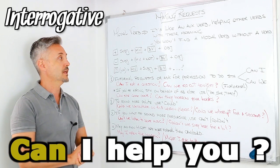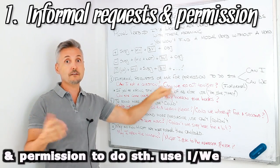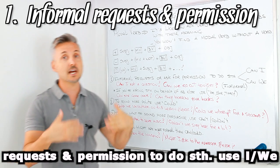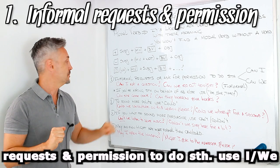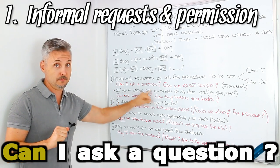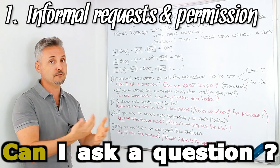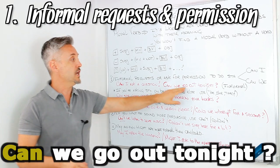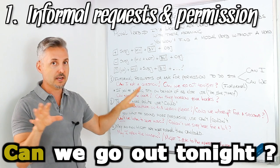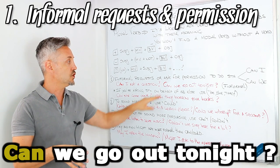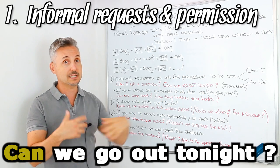For informal requests or to ask for permission, we use can I or can we. Just like my example, can I ask a question? This is a permission. I'm asking for permission. Can we go out tonight? This is informal, obviously. We're talking about informal language. So you can say this to a friend. Can we go out tonight? You're asking for permission.